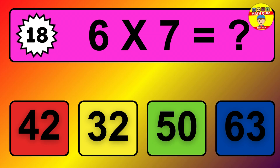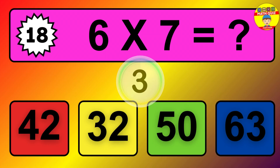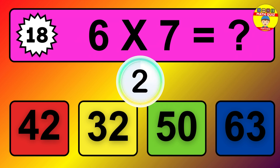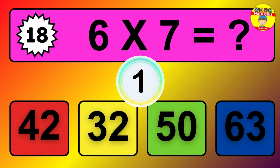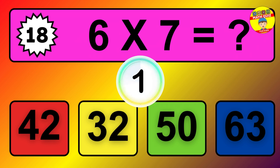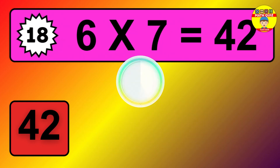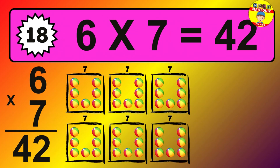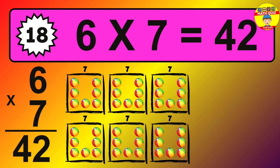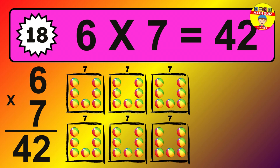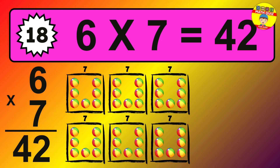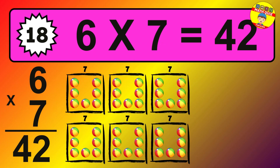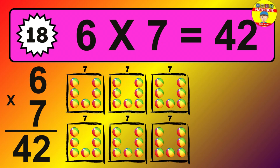Question 18. 6 times 7 equals what? The answer is 6 times 7 is 42. To calculate, we have 6 groups with 7 balls each one. So, how many balls do we have? 42 balls.